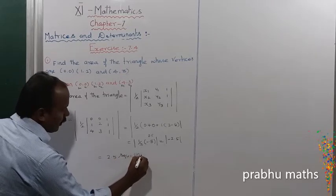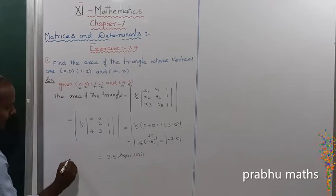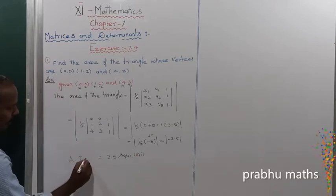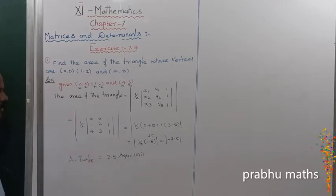That is the answer. The area of the triangle is 2.5 square units. Thank you very much.